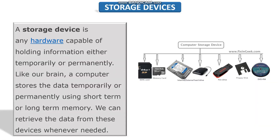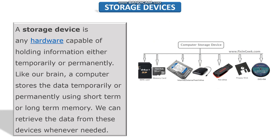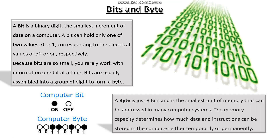Next, we are moving to storage devices. A storage device is any hardware capable of holding information either temporarily or permanently. Like our brain, a computer stores data temporarily or permanently using short-term or long-term memory. We can retrieve the data from these devices whenever we require it. We have a few common storage devices, and we are going to discuss about them in detail — including how a computer stores or works on data.